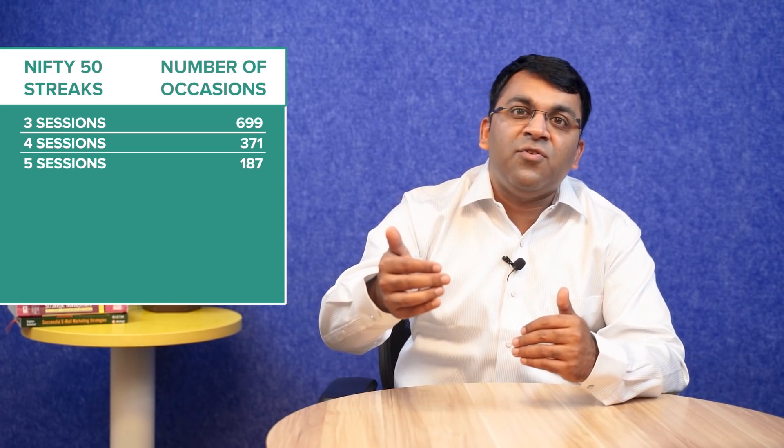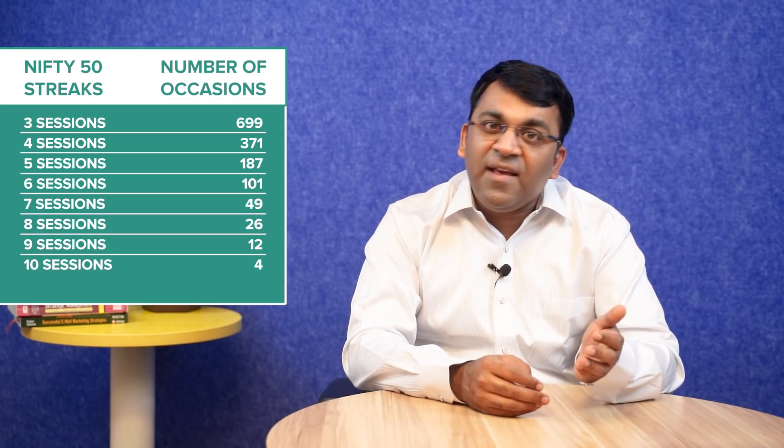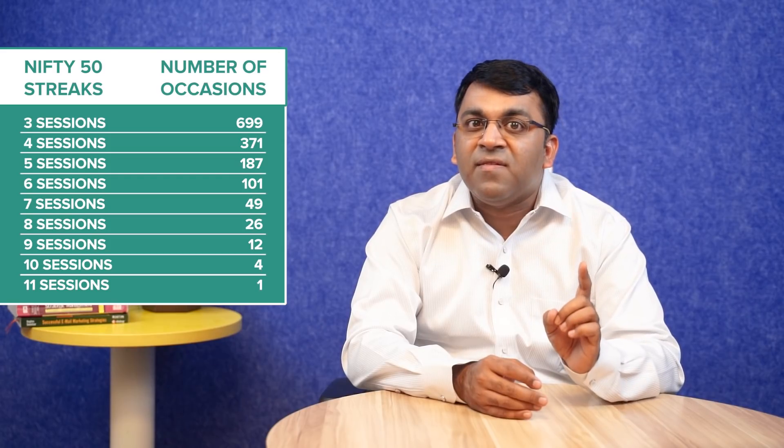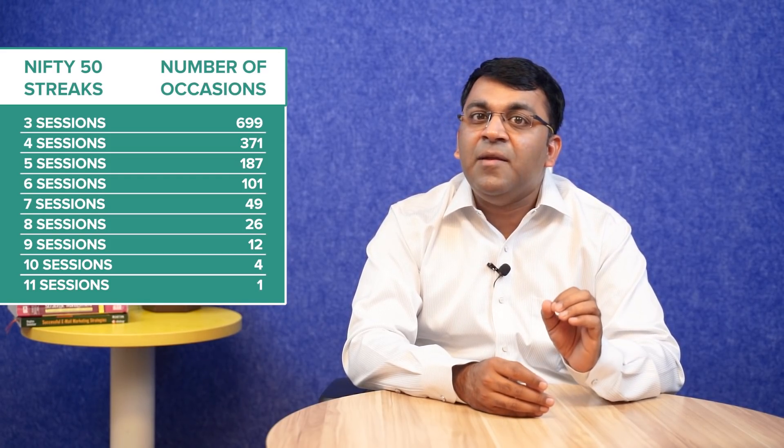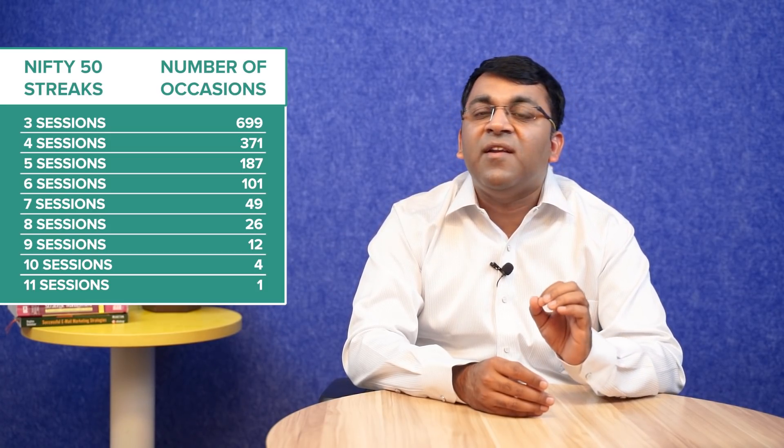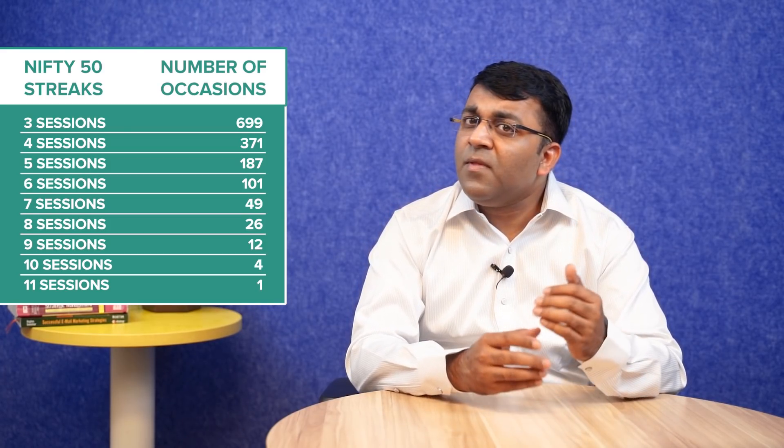Let's create a Nifty 50 version of what happened at the Monte Carlo casino. We've taken the daily Nifty 50 closing data from 2003 onwards and mapped out series of consecutive up days. The total number of trading days is 4,657. Of these, there were 699 occasions when the Nifty 50 closed higher for three days in a row; four days in a row happened 371 times; five days 187 times; six, seven, eight, nine days — that happened 12 times; ten days in a row was four times. The highest streak recorded was 11 straight days, when the Nifty 50 climbed from 4,518 points on 14th September 2007 to 5,210 points on 3rd October 2007.